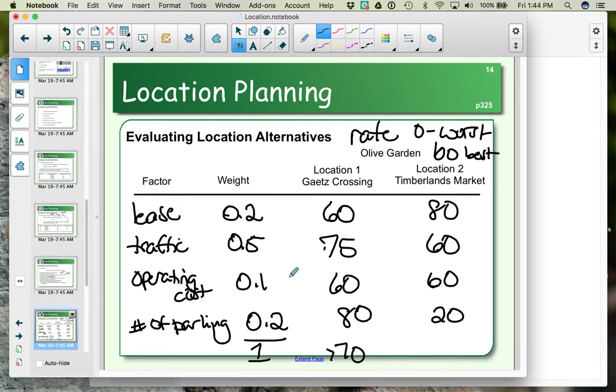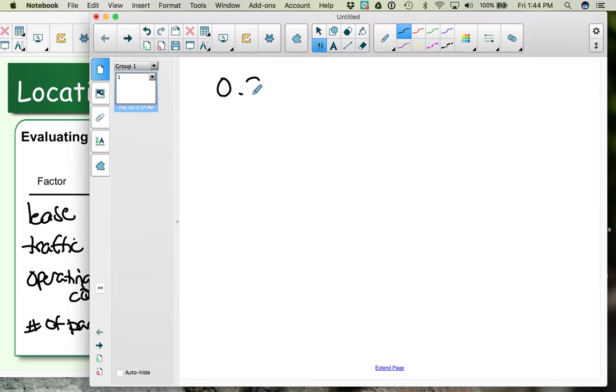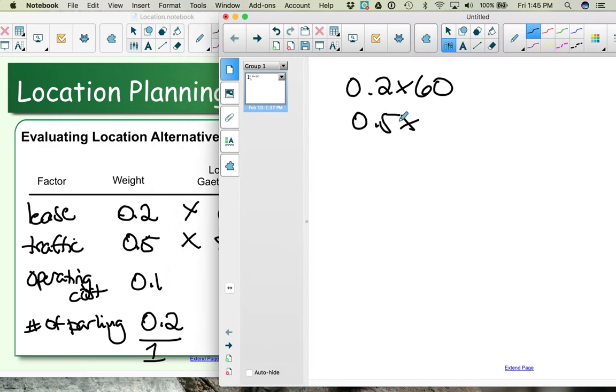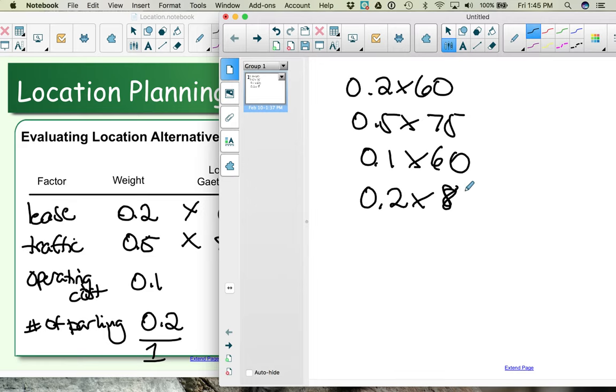Now that we have our weights and our ratings for each location—for Gates Crossing and for Timberlands market—we want to multiply our weights times our ratings. What we would do is take 0.2 times 60, plus 0.5 times 75, plus 0.1 times 60, plus 0.2 times 80, and figure out what that total is.